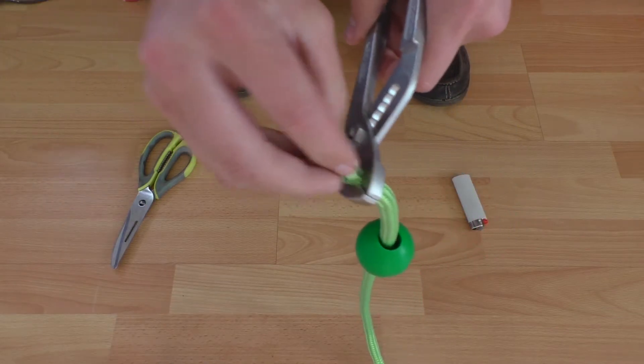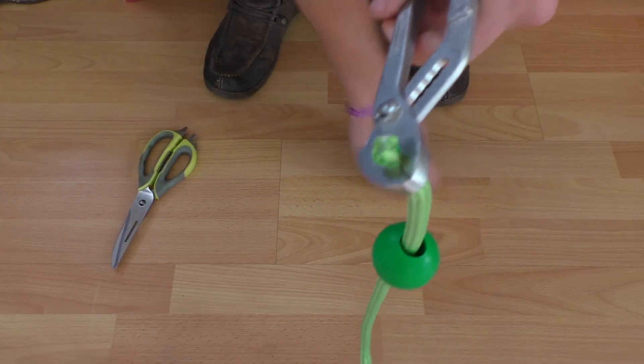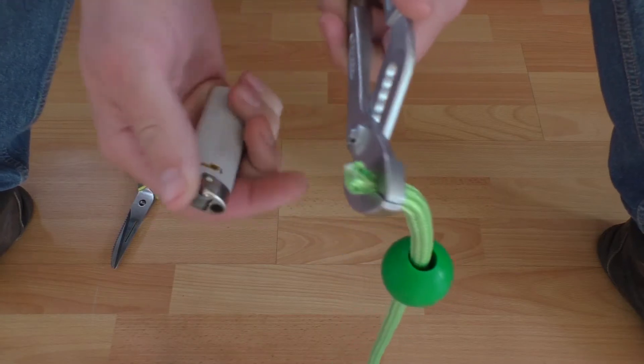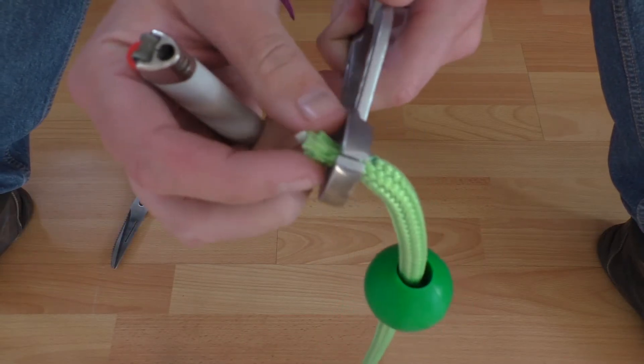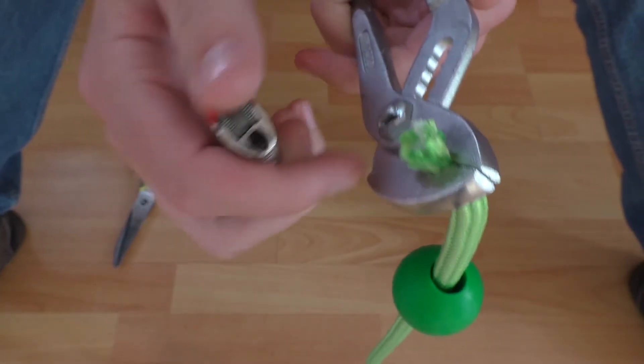So now what we're going to do: you're going to keep holding it with your pliers, don't have to hold it too tightly or anything. This is just so that the fibers don't all come out.